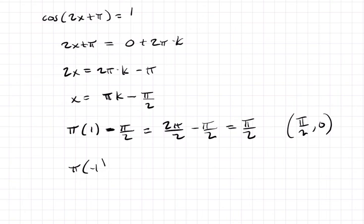But also, if k is negative 1, you would get pi times negative 1 minus pi over 2 equals negative 2 pi over 2 minus pi over 2, which equals negative 3 pi over 2. And that was beyond our domain. So, actually, I should plug in k is 0. That's the next integer down. Pi times 0 minus pi over 2 is just negative pi over 2.